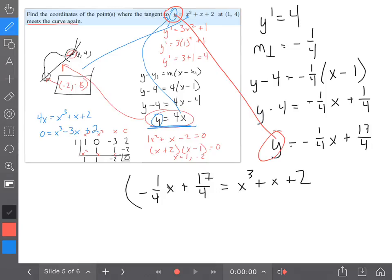When I was in sixth grade, I participated in the literary festival and I took the fractions test, and I was the best in the whole city at fractions. Anyway, I don't like fractions. I'm getting rid of them by multiplying by 4, which will give me -x + 17 = 4x³ + 4x + 8. Move everything to the same side, I'm going to have 0 = 4x³ + 5x - 9.